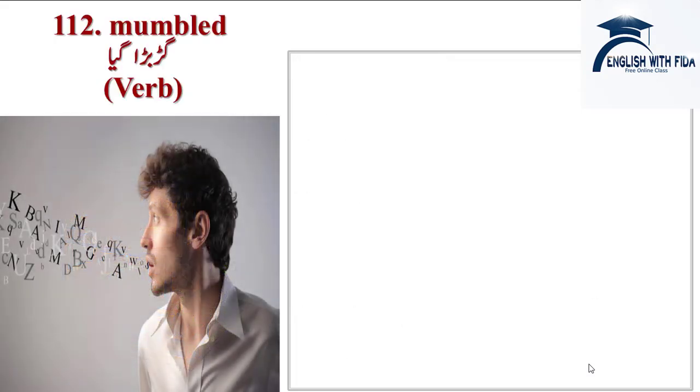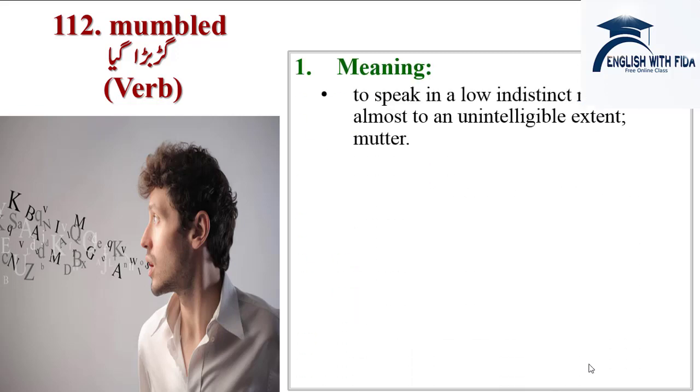Next word is mumbled. Mumbling means speaking in a way that the listener cannot understand what is being said. Meanings are to speak in a low indistinct manner, almost to an unintelligible extent. Sentence: he mumbled something about expenses.